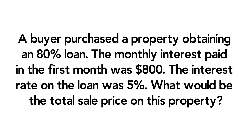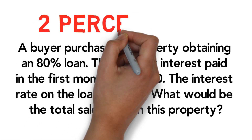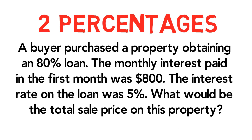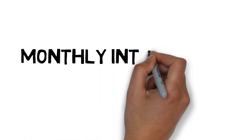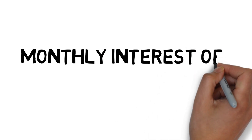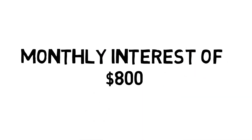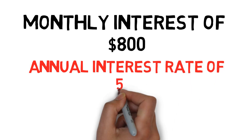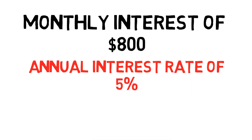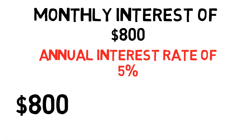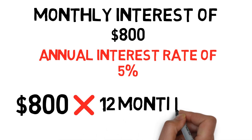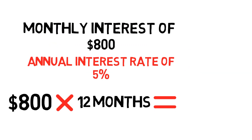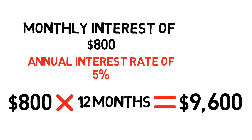What would be the total sale price on this property? We have two percentages in our math problem, which tells us to draw two Ts. Let's begin with the monthly interest of $800. Since the annual interest rate is 5%, we need to equate that with the annual interest paid. We take $800 times 12 months to arrive at $9,600 total interest for the first year.